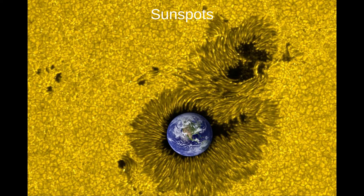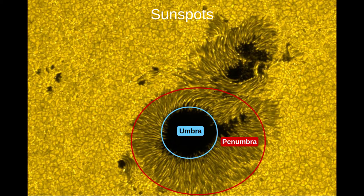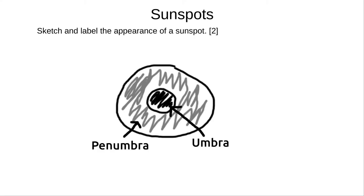Sunspots are huge — here's the Earth for comparison. There are two main parts of a sunspot: the inner dark part, called the umbra, and the outer, less dark part, called the penumbra. These are the same words we use to describe the shadows in an eclipse. The sunspots disrupt the convection cells, preventing heat from reaching them from below. This means they're much cooler — only about 3,800 Kelvin in the umbra, and around 5,600 Kelvin in the penumbra. Cool enough for the umbra to appear black in this image. You may be asked to sketch the appearance of a sunspot in the exam; a simple labelled diagram will do fine.